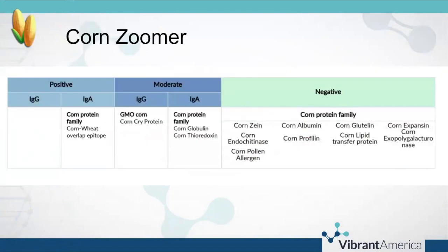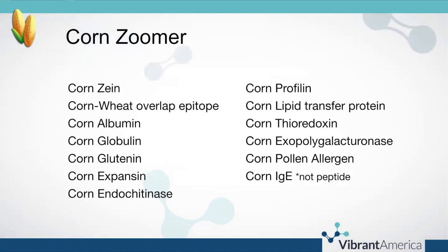The corn zoomer basically includes peptide level assessment of the proteins found in corn, especially the most antigenic ones. This is an example of what you might see on a corn zoomer report. This is the list of markers that are being measured and we'll walk through the important points you'd want to know about various markers.